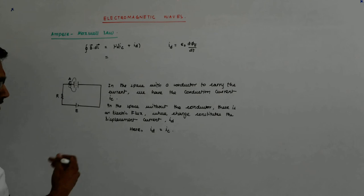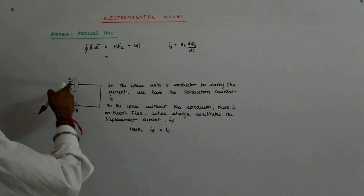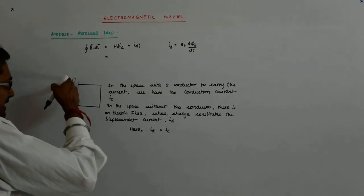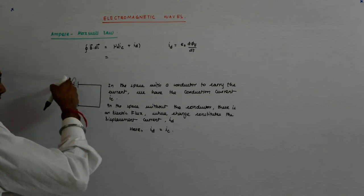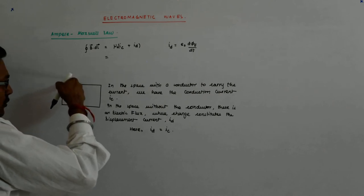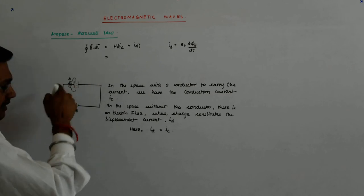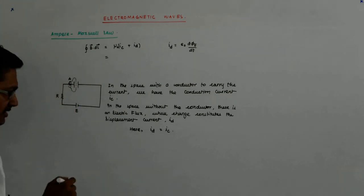Now that contradiction of taking, of there being a field here when we were taking this current and there being no field here when we were taking this current, that goes off. You understand?